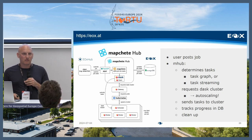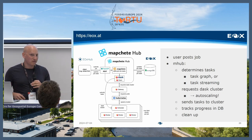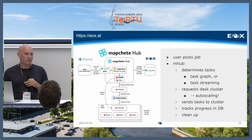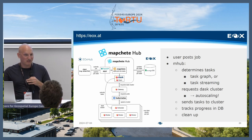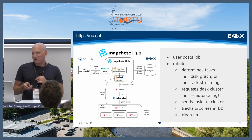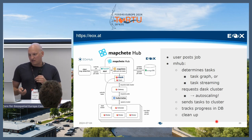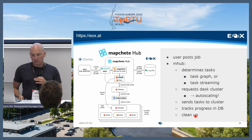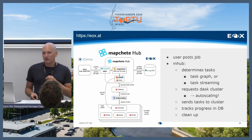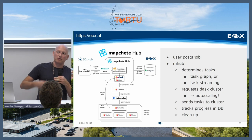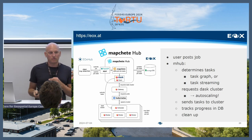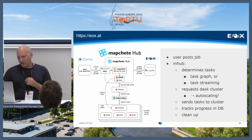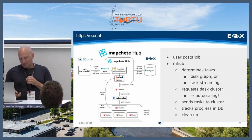Then it sends tasks to the cluster and waits until they're ready. In the meantime, it tracks progress in a MongoDB in the background. You post a job, get an ID back, and can poll the job to see the percentage of progress. The interface we implemented is OGC API Processes — we implemented it about two years ago, and the specification has evolved since, so it's roughly 95% OGC API Processes. In the end, it cleans up and finishes in the best case.